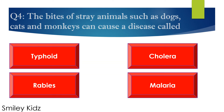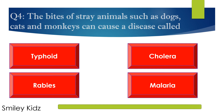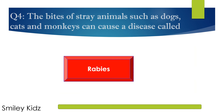Question number 4. The bites of stray animals such as dogs, cats, and monkeys can cause a disease. This is called? Options are A. Typhoid, B. Cholera, C. Rabies, and D. Malaria. Your time starts now. Your time is up. The right answer is rabies. The bites of stray animals such as dogs, cats, and monkeys can cause a disease called rabies.